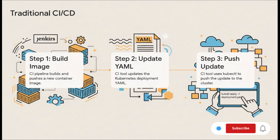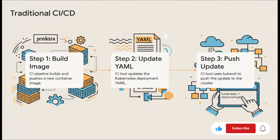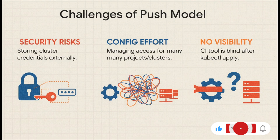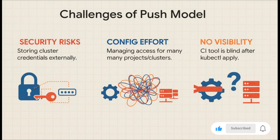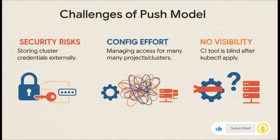This push model flow probably looks familiar: your CI tool, say Jenkins, builds your code, pushes a new container image, tweaks the Kubernetes manifest file, and then uses kubectl apply to directly push that change into the cluster. This creates major headaches — huge security risks from storing cluster credentials outside the cluster, configuration overhead that explodes as you add more projects, and the real kicker: once the CI tool runs that kubectl command, it's done. It's totally blind. It has no clue if your app is actually healthy or stuck in a crash loop forever.